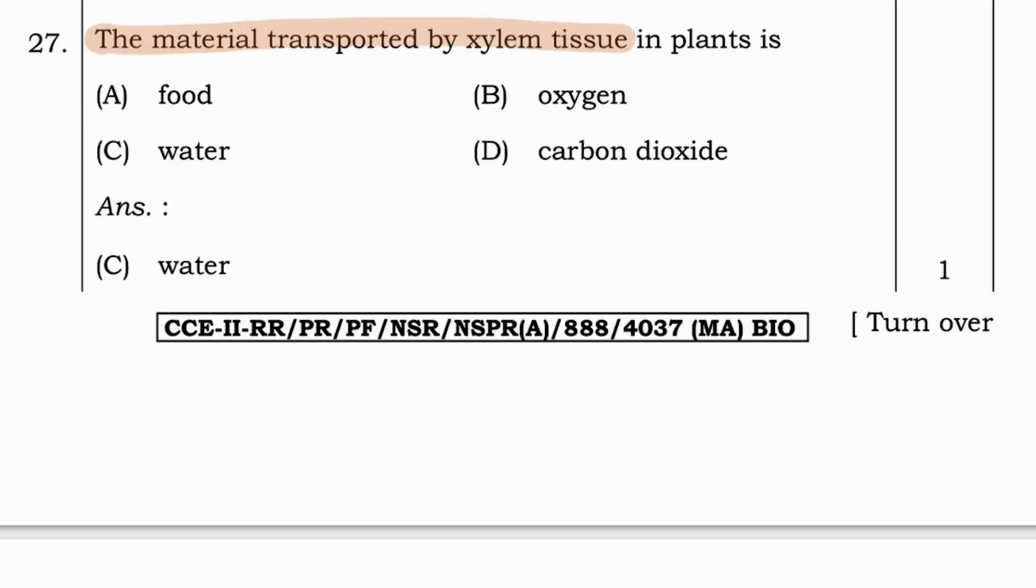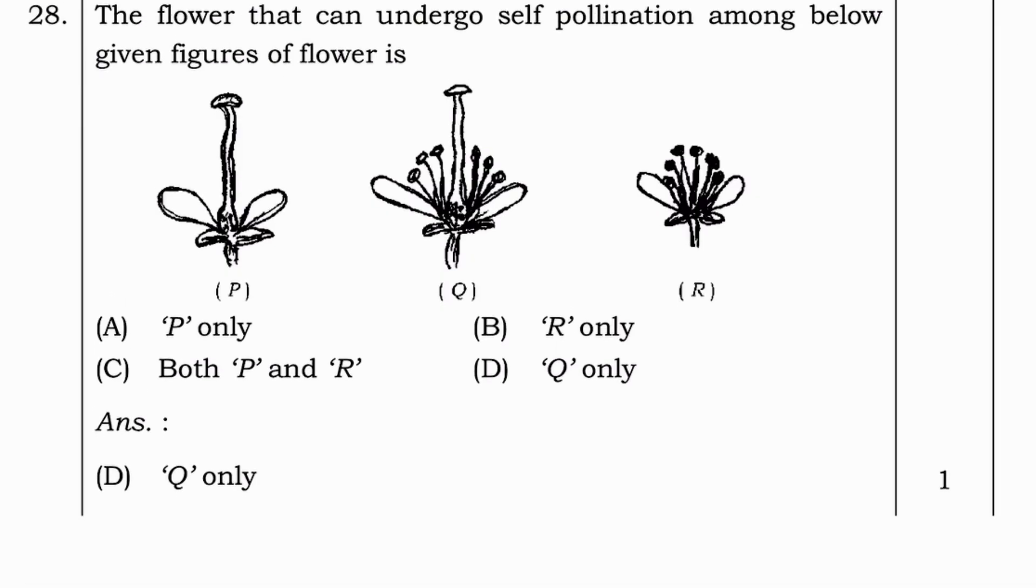Next question. The material transported by xylem tissue in plants is food, oxygen, water, or carbon dioxide. Answer is option C water.